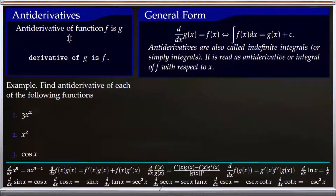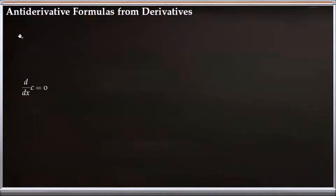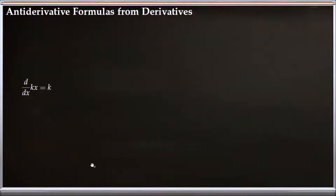Next we'll look at deriving some formulas for antiderivatives. We can derive all the formulas for antiderivatives directly from derivative formulas. We know the derivative of a constant is zero, so the antiderivative of zero with respect to x is a constant. We also know the derivative of kx is k, so the antiderivative of k with respect to x is kx plus C.